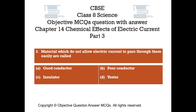Question number 3. Materials which do not allow electric current to pass through them easily are called. Option A: Good conductor. Option B: Poor conductor. Option C: Insulator. Option D: Tester.